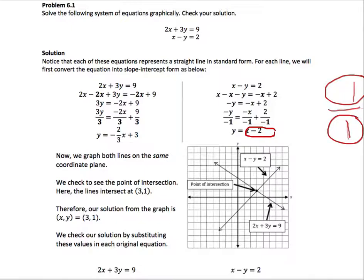We start with the point at negative 2. We go 1 unit up and 1 unit to the right to mark another point. Again, 1 unit up and 1 unit to the right, marking another point. Connecting these points gives us the graph of the second line.